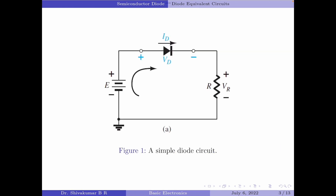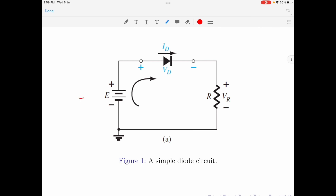To elaborate on the need for studying equivalent circuits, let us consider the simple circuit shown in figure one. We have a DC voltage source, a diode, and a load resistor R. Assume the applied voltage is 10 volts and the load resistance is 10 ohms. In this scenario, if I ask you what is the voltage across the diode Vd and the current Id when the diode is in the on state, you need to know the internal characteristics of the diode.